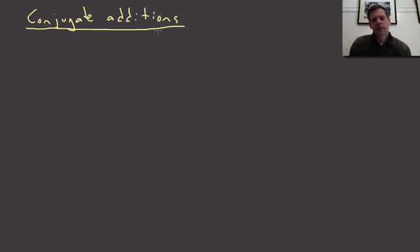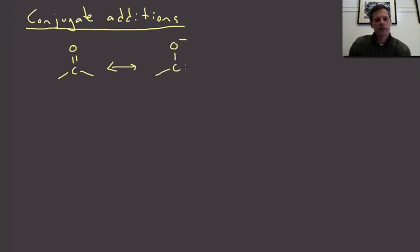Let's talk about a different type of nucleophilic addition to a carbonyl. This is a subject called conjugate additions. I want to remind you of what we've been talking about all along: if you're dealing with a carbonyl, you can think of its reactivity in terms of this resonance form, where we put positive charge at the carbon and negative charge at the oxygen. That explains why we do nucleophilic attack at the carbon of the carbonyl — that's the reactivity pattern we've become used to.